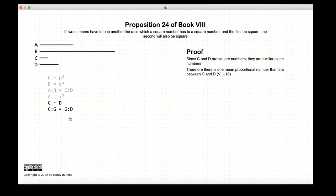And if they are similar numbers, and they are square, then there is one mean proportional that falls between them, according to Proposition 18 of this book.